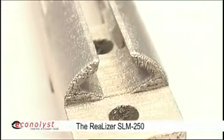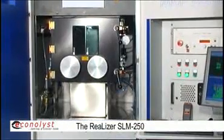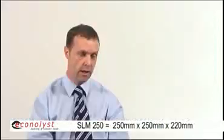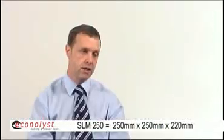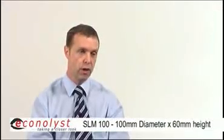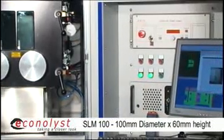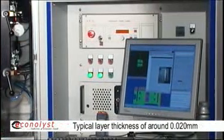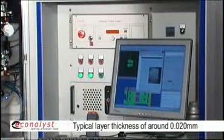The larger machine, the SLM 250, is a 250 millimeter cube. The smaller machine is 100 millimeters diameter by 60 millimeters height. The layer thickness is 20 microns up to 100.